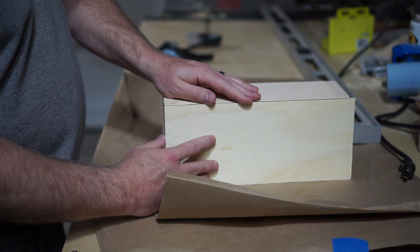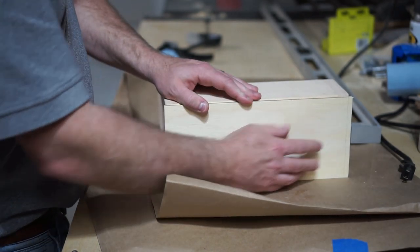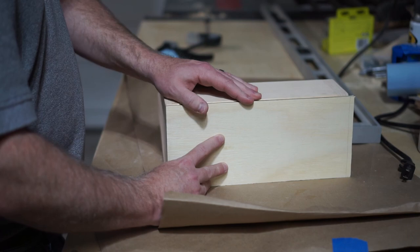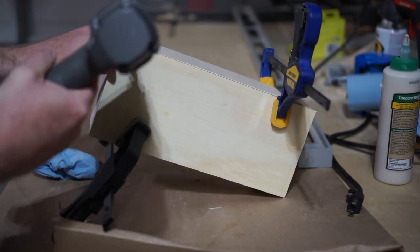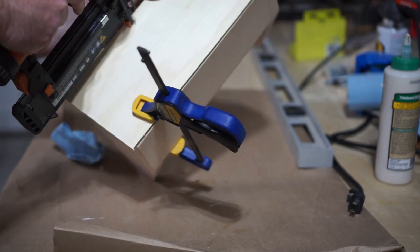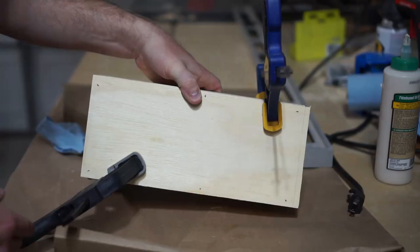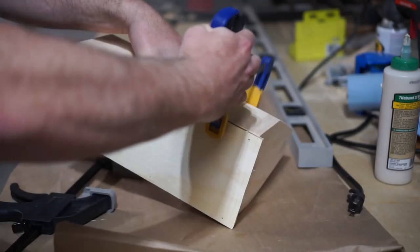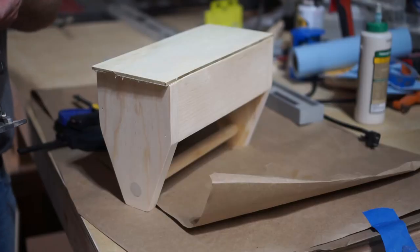And then glue it onto the bottom. I purposely left my bottom piece a bit long so that I could use a trim router to clean it up at the end. Obviously if you don't have a trim router, just make sure your bottom piece fits the exact bottom dimensions. Again, glue and clamp, some brad nails, and you're good.